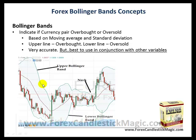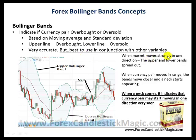Bollinger Bands is very accurate, but it is best to use in conjunction with some other variables, and I'll tell you the reason for that. When the market moves strongly in one direction, the upper and the lower bands spread out. For example, if you look here, the market is moving in this particular direction and the Bollinger Bands are quite far apart.